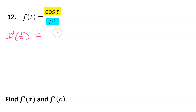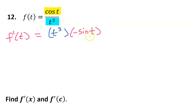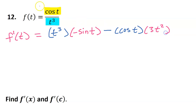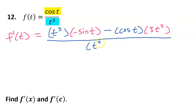So low d high — we start with the low function, which is just t to the third power. And then we do d high, the derivative of the upper function. The derivative of cosine is negative sine, so we will have negative sine t. Low d high less high d low — so less, and then high, we write the upper function. Then d low, the derivative of the lower function, which with the power rule will be 3t squared. Draw the line and down below, the bottom squared will go. So that's it — that is the derivative of f.